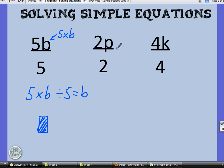2p divided by 2 is just p. And 4k divided by 4 is just k. You could look at these as the 5s cancelling each other out, 2 and 2 cancelling each other out, 4 and 4 cancelling each other out.